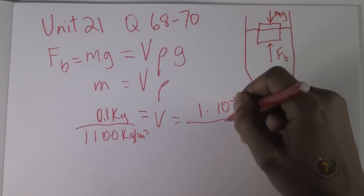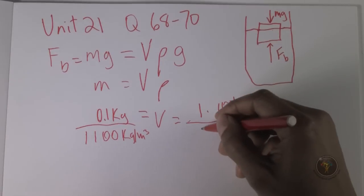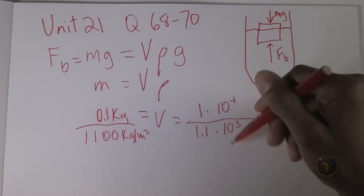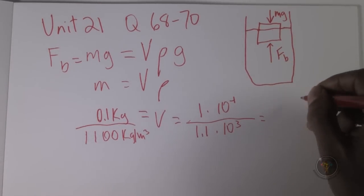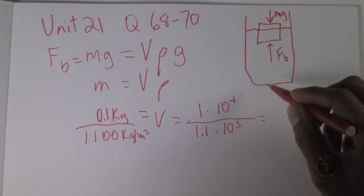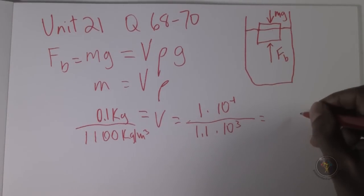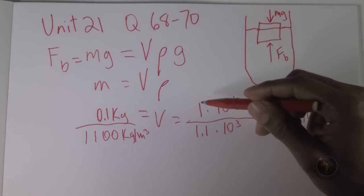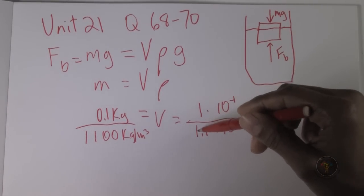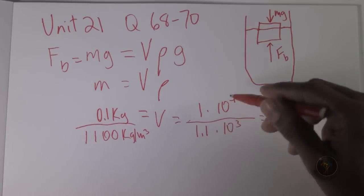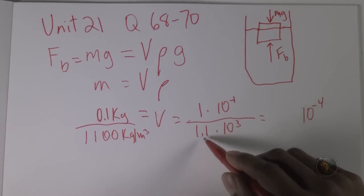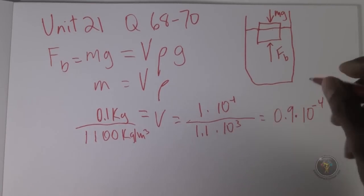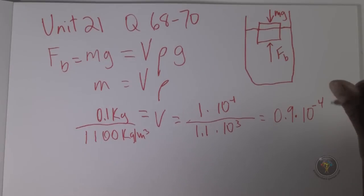I'm going to change 0.1 kilograms to 1 times 10 to the minus 1 using exponents. And this is 1.1 times 10 to the 3. It's much better to work with exponents when you're doing longhand math since you're not allowed using a calculator. So 10 to the minus 1 minus 10 to the 3, that's 10 to the minus 4. And 1 divided by 1.1 makes 0.9, so we have 0.9 times 10 to the minus 4 meters cubed.